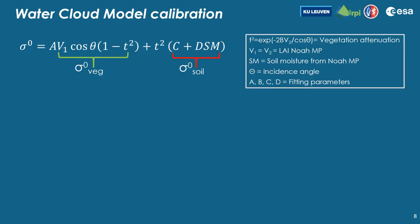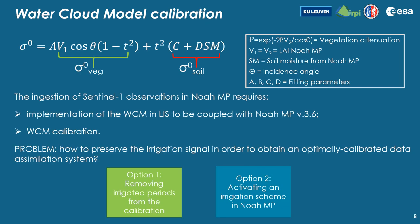We then started to build up the data assimilation system, and here you can see the equation of the water cloud model. The ingestion of Sentinel-1 observations requires two steps: the first is to implement the water cloud model, and the second is the calibration of its parameters — two vegetation parameters A and B, and two soil parameters C and D.